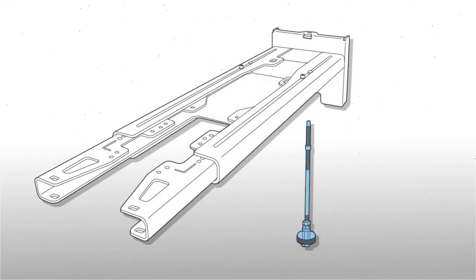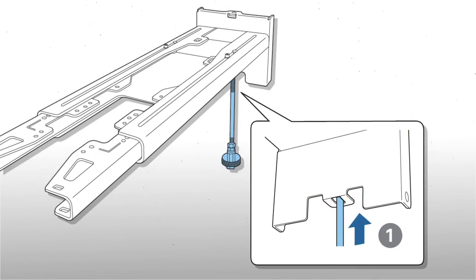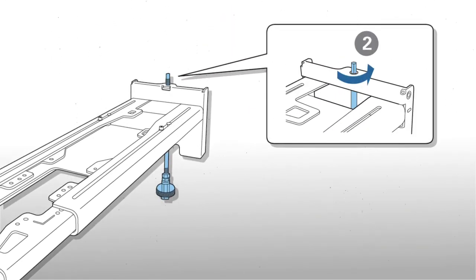Insert the long adjustment screw through the bottom of the arm and through the hole at the top of the arm.